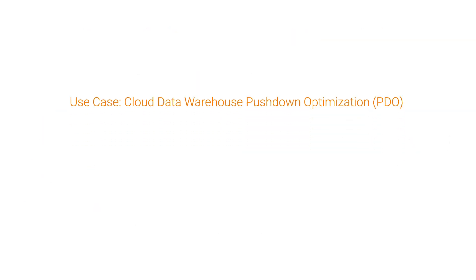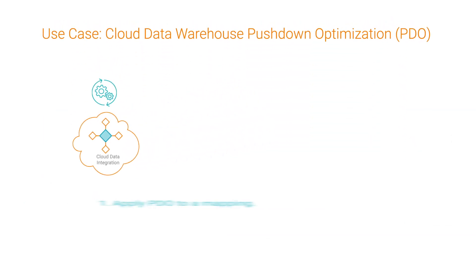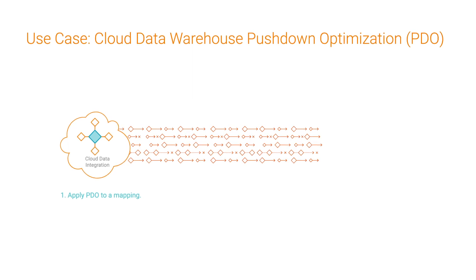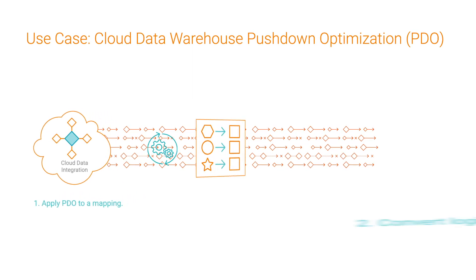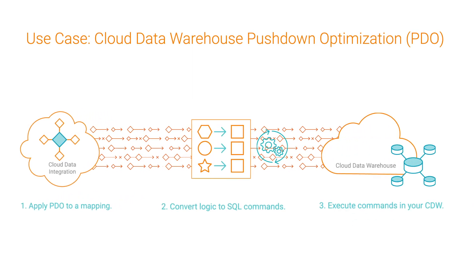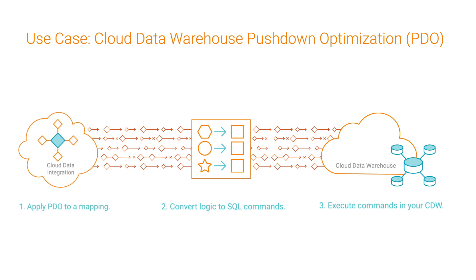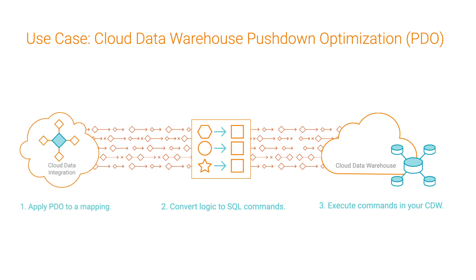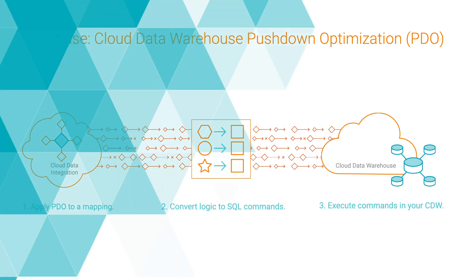With Data Warehouse Pushdown Optimization, Cloud Data Integration translates the entire transformation logic into SQL statements that are executed directly in your Cloud Data Warehouse, reducing overall processing time and operating costs.